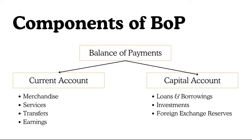The capital account records all transactions in assets. Assets could include any form in which wealth can be held — stocks, bonds, government debts, loans, anything. Purchase of an asset records a deduction in the capital account. For example, if an Indian is purchasing a US car company, money is going out. The capital account of India's BOP will show a debit, as the Indian has to pay in dollars, meaning foreign exchange is going out of India.